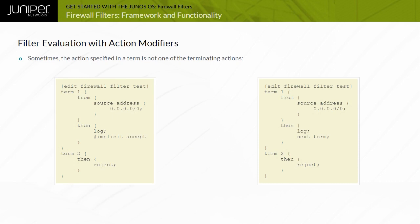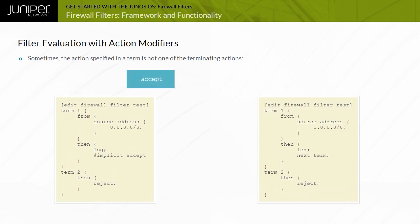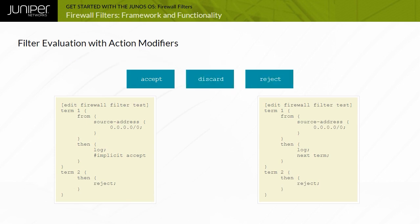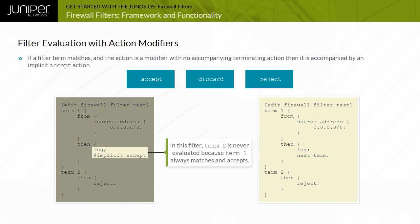Sometimes the action specified in a term is not one of the terminating actions Accept, Discard, or Reject. In this case, the default behavior is that Junos applies an implicit accept action and filter evaluation terminates. In this filter, term 2 is never evaluated because term 1 always matches and accepts.